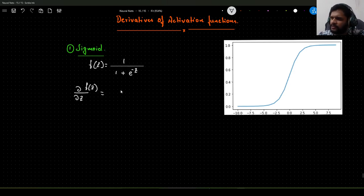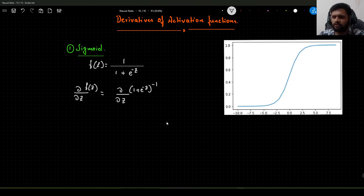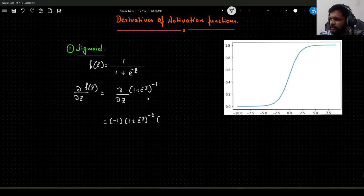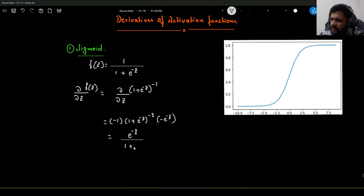This can be written as d by dz of 1 plus e to the power minus z, all to the power minus 1. Applying the rule of differentiation, I will get minus 1 times 1 plus e to the power minus z to the power minus 2, and the derivative of e to the power minus z is minus e to the power minus z. Multiplying these together and taking terms to the denominator, it becomes e to the power minus z divided by 1 plus e to the power minus z, squared.